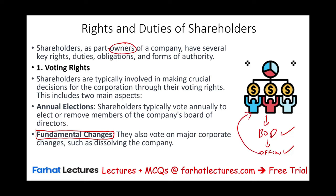One of the key things that shareholders do is voting. They have the right to vote — specifically to elect the board of directors. Shareholders typically vote annually to elect or remove members of the board. The other major thing they vote on is fundamental changes, which are major corporate changes such as dissolving the company. In this session we will look at those fundamental changes, what they are, and the procedures that balance the roles of shareholders, officers, and directors.